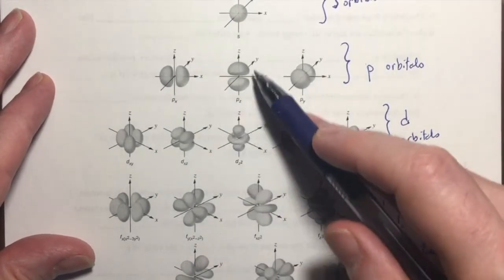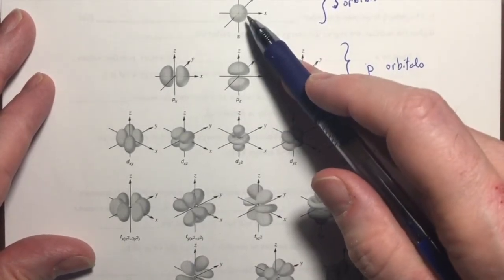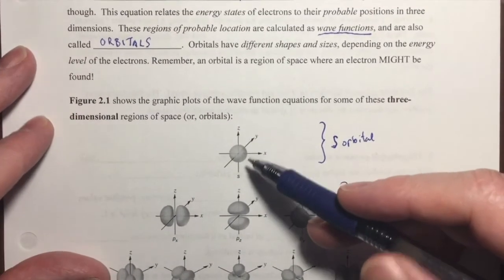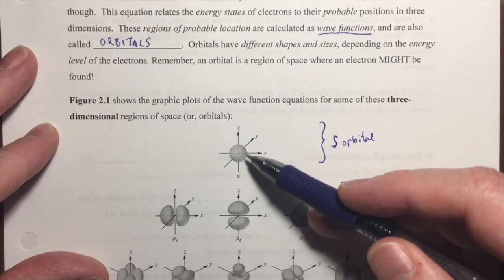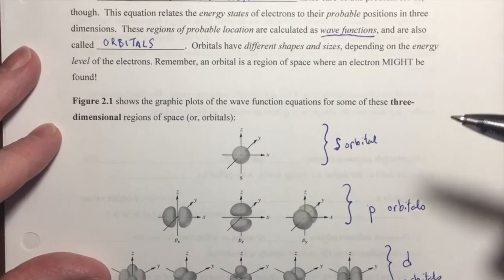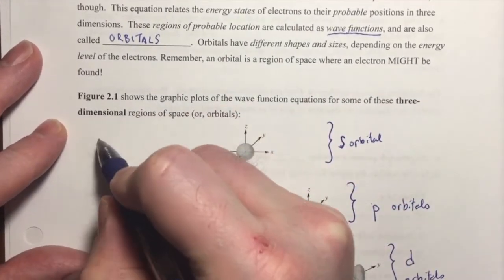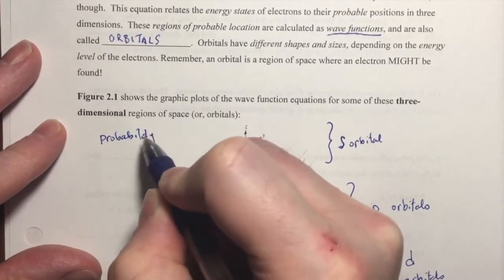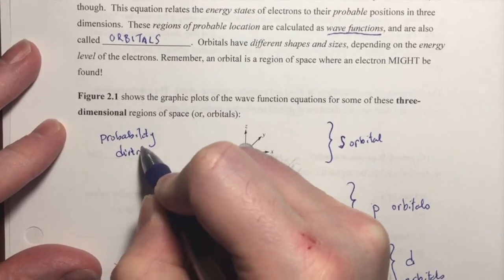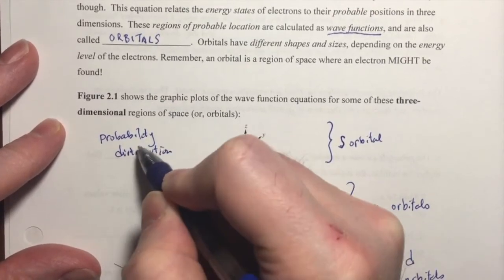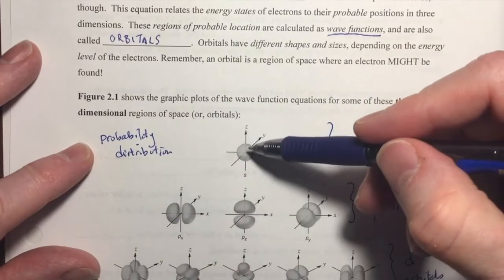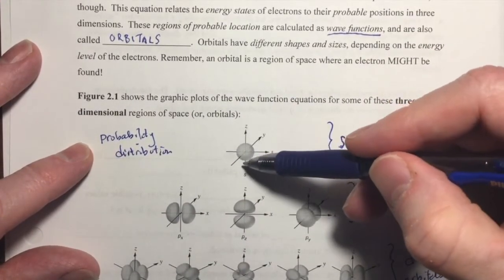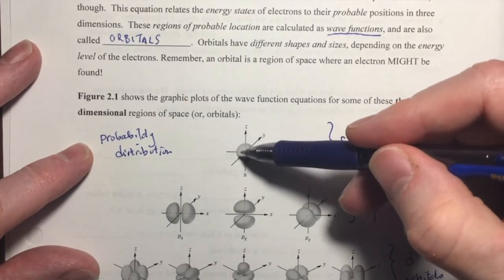We also call this a probability distribution. So, it's a probability distribution. It's a distribution of the electron's probability of being located here. So, the probability of finding an electron around an atom is given by this three-dimensional graph.